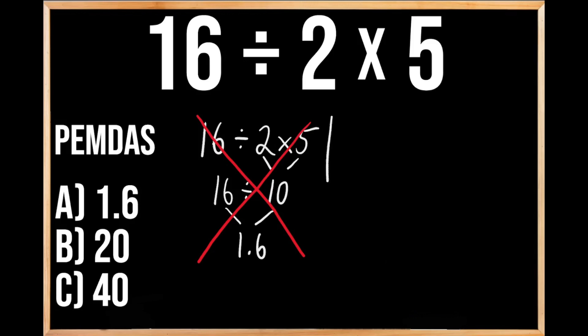So let's go ahead and work through this problem together, except this time we're going to make sure that we're following the order of operations. The original problem was 16 divided by 2 times 5.